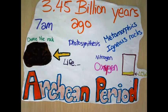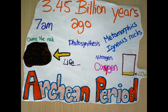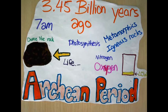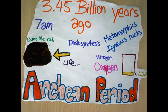4.5 billion years ago, at 7 a.m., was the Archean period. At that time, metamorphic rock was found. There was nitrogen and oxygen, but oxygen was really low. Scientists found life on a dome-like rock, and photosynthesis also began.